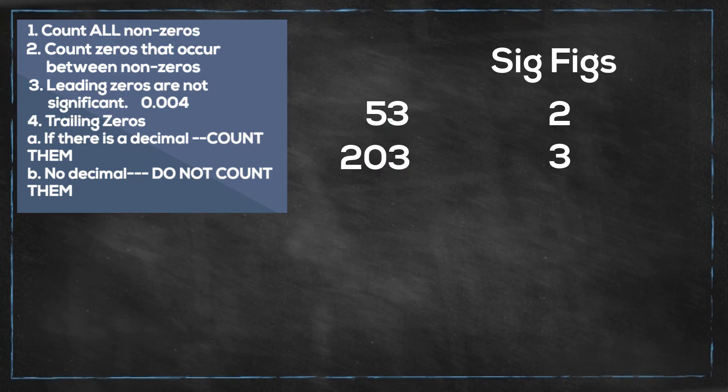Next we have one with some leading zeros. Remember the rules. Leading zeros are not significant. So you will not count until you get to the 9. So you will have three significant figures.